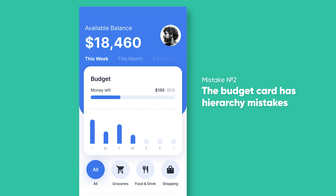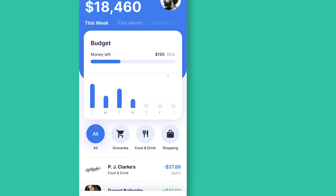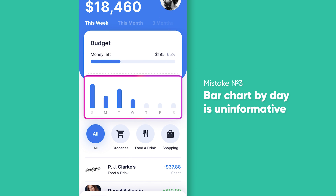It would free up vertical space while emphasizing the remaining budget. The next mistake is that the bar chart by day is uninformative. It is important for users to see the full picture of their spendings — it gives them a feeling of control over their finances. This is the goal of the bar chart below the budget section. This specific chart shows the dynamics, not the specific amount spent on each day. One solution could be adding the amount above or below.